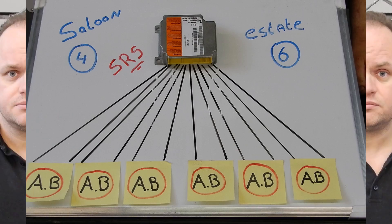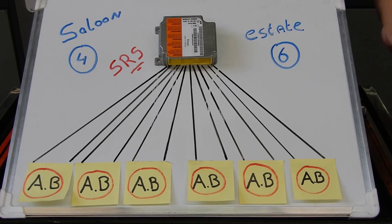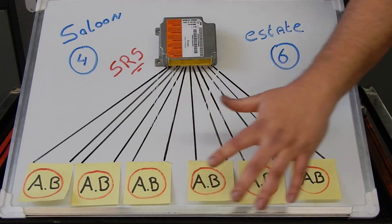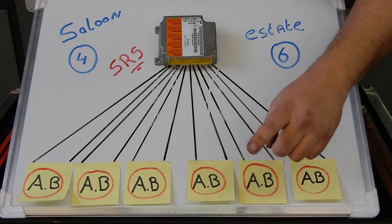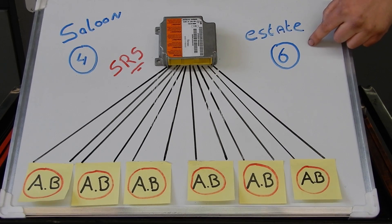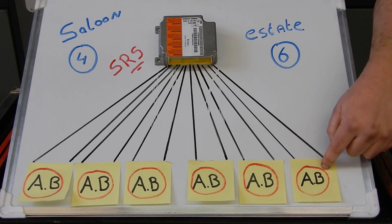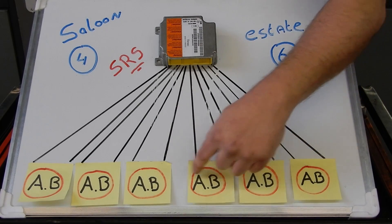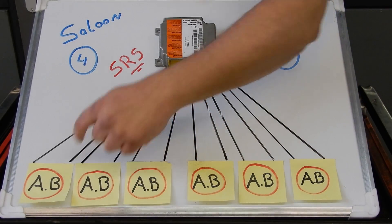If we want to diagnose this car we've got to have a proper understanding about coding. Let me try to explain it using an example. On this board I've got a simplified airbag system. Now let's imagine on this brand the estate model has got six airbags: one, two, three, four, five, six.